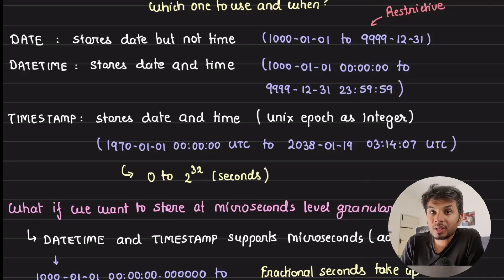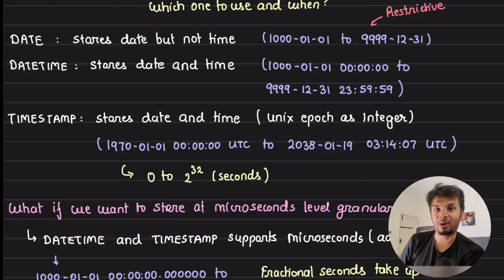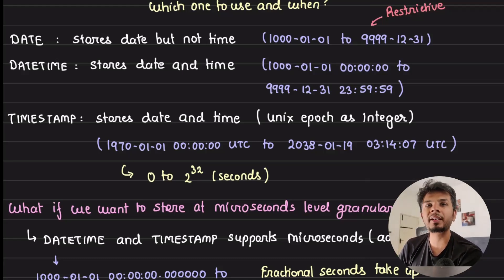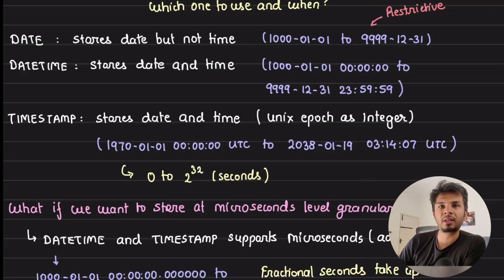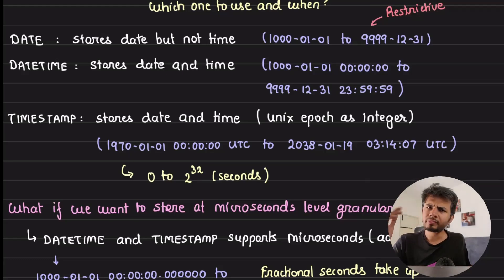If your use case requires storing a datetime beyond 2038, you cannot use timestamp. Databases may come up with extended types — for example using an 8-byte integer — in later versions, but the key point is: if your use case requires storing dates far in the future, beyond 2038, you cannot use timestamp.